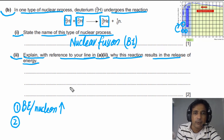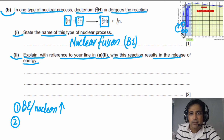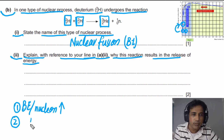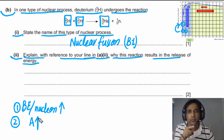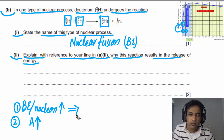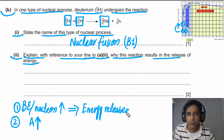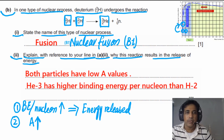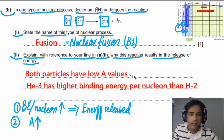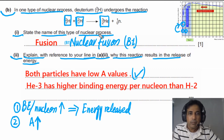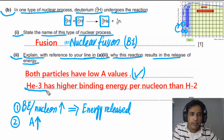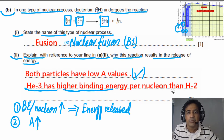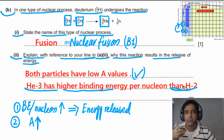The mass number of helium is greater than the mass number of deuterium, so mass number increases — meaning the products have greater mass number than the reactants. As binding energy per nucleon increases, energy is released. For the written answer: both deuterium particles have low A values, and helium has a higher binding energy per nucleon than deuterium, so energy is released.